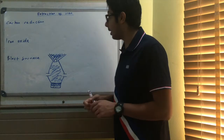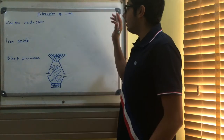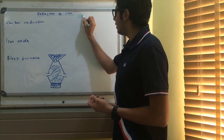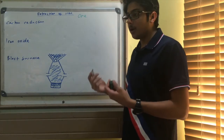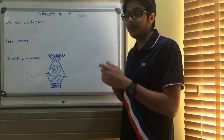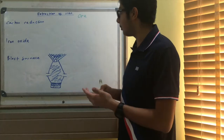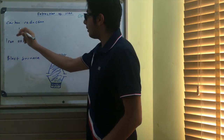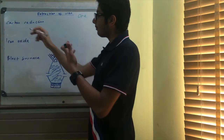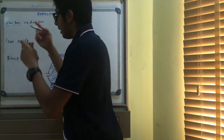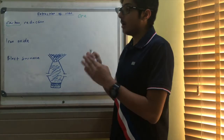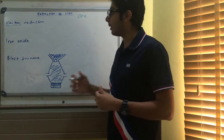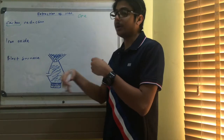The extraction of iron. First of all, metals are extracted from ores. An ore is a rock where metal can be extracted economically. Iron is extracted from its ore by a process called carbon reduction — because in the reactivity series, iron is below carbon, so carbon can displace iron, and that's how you extract iron from its ore.